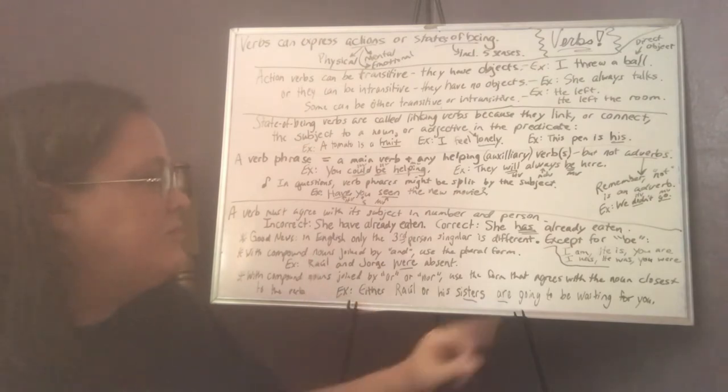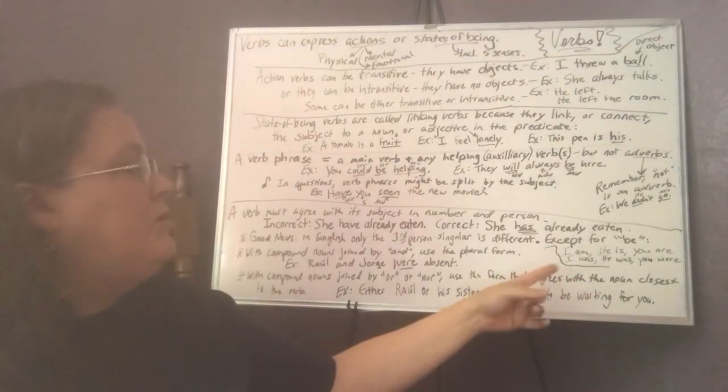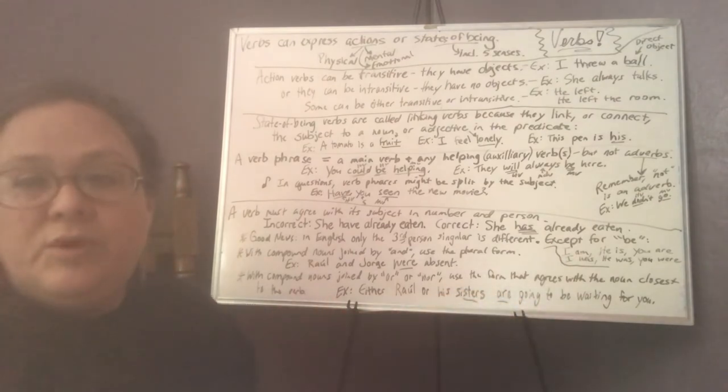There's one exception, the verb to be, and it has different forms. So I am, he is, you are, we are, they are. I was, he was, you were, they were, we were.